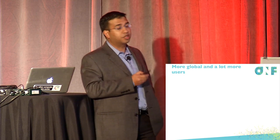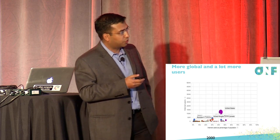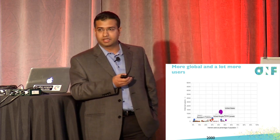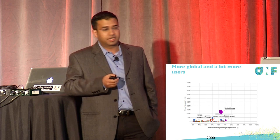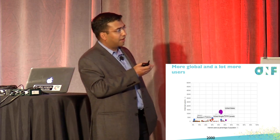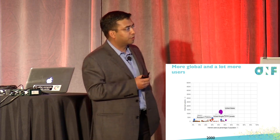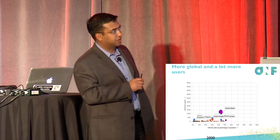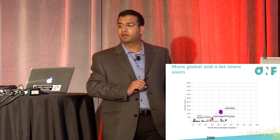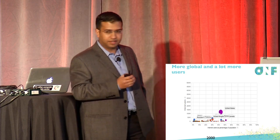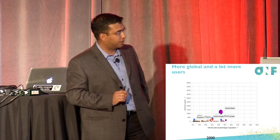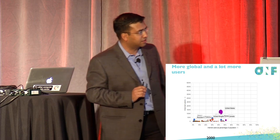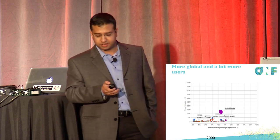Today we are a lot more global. In this chart, for each country I show the number of Internet users and also the number of Internet users as a percentage of the population. On the x-axis is Internet users as a percentage of population; on the y-axis is the number of Internet users. The size of the bubble represents the number of Internet users. In 2000, most countries had insignificant Internet usage — a few developed markets popped up, most notably the United States, sitting around 50% penetration.